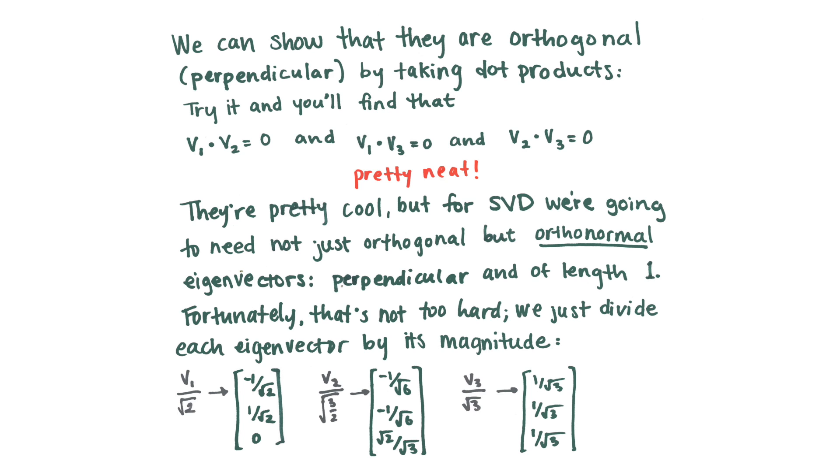Unfortunately, we're not quite done. We need not only orthogonal eigenvectors, but they need to be orthonormal, which means they're also length one to do SVD. And so fortunately, that's not actually that hard. We just divide each eigenvector by its magnitude. And we've done that here. And we get these new eigenvectors. They're pretty cool.